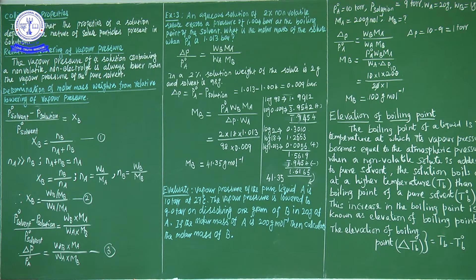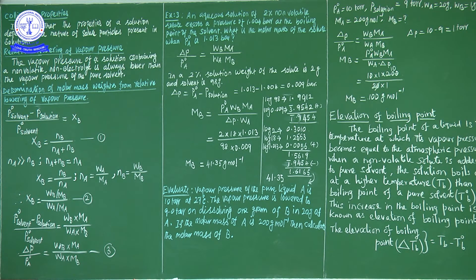A liquid has a tendency to escape from the liquid state due to its kinetic behavior. Liquid molecules possess the escaping tendency from the liquid state to the vapor state. In a closed container, liquid molecules escape as vapor and collide with each other and with the walls of the container, then condense back as liquid. So condensation and evaporation are in equilibrium condition.